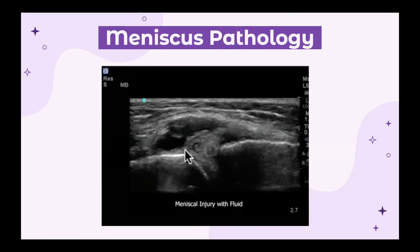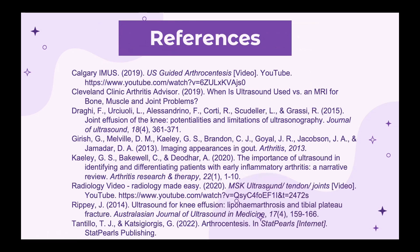Here we can see the femur and tibia with the meniscus in between. You can also see effusion here because of the displacement of the meniscus, and there are cysts present in the meniscus as well. Certain zones of the meniscus are not visible to ultrasound, but we can see parts of what is being affected. There are many more pathologies that ultrasound can detect within the knee and other joints, showing just how useful ultrasound can be in the diagnostic and procedural process. Thanks.